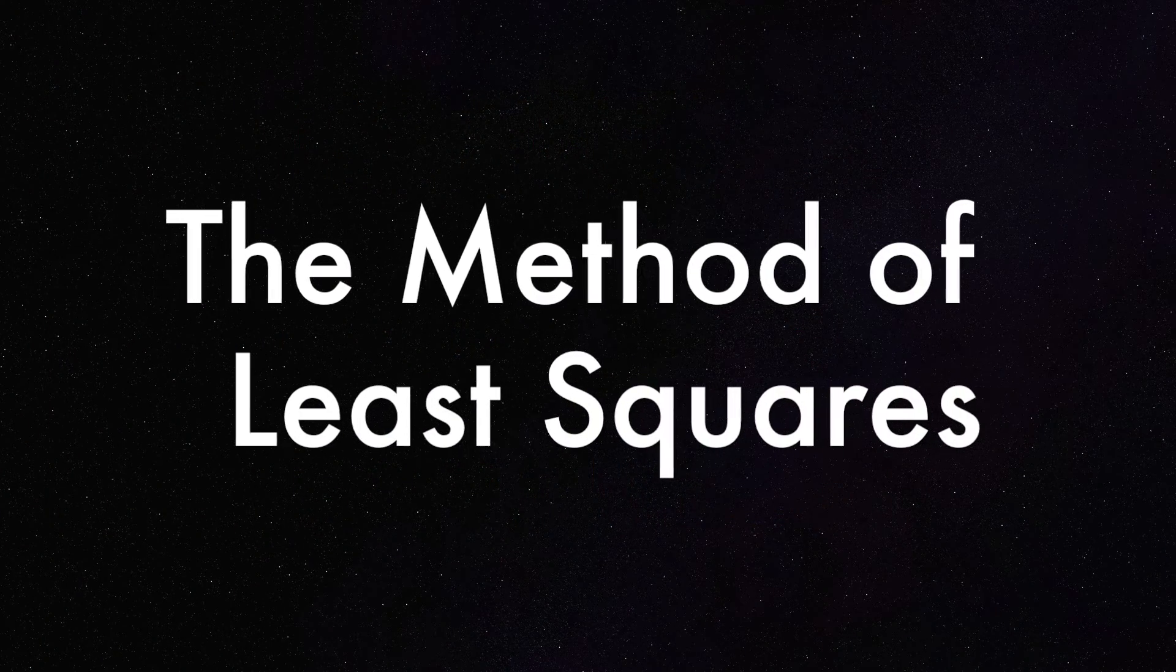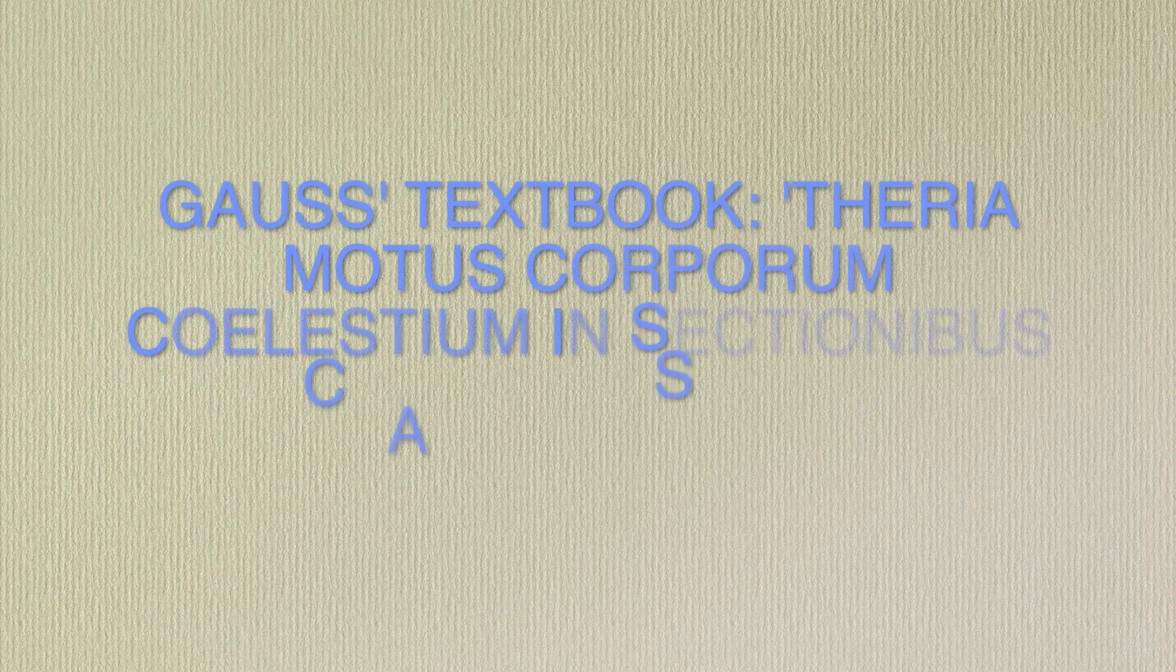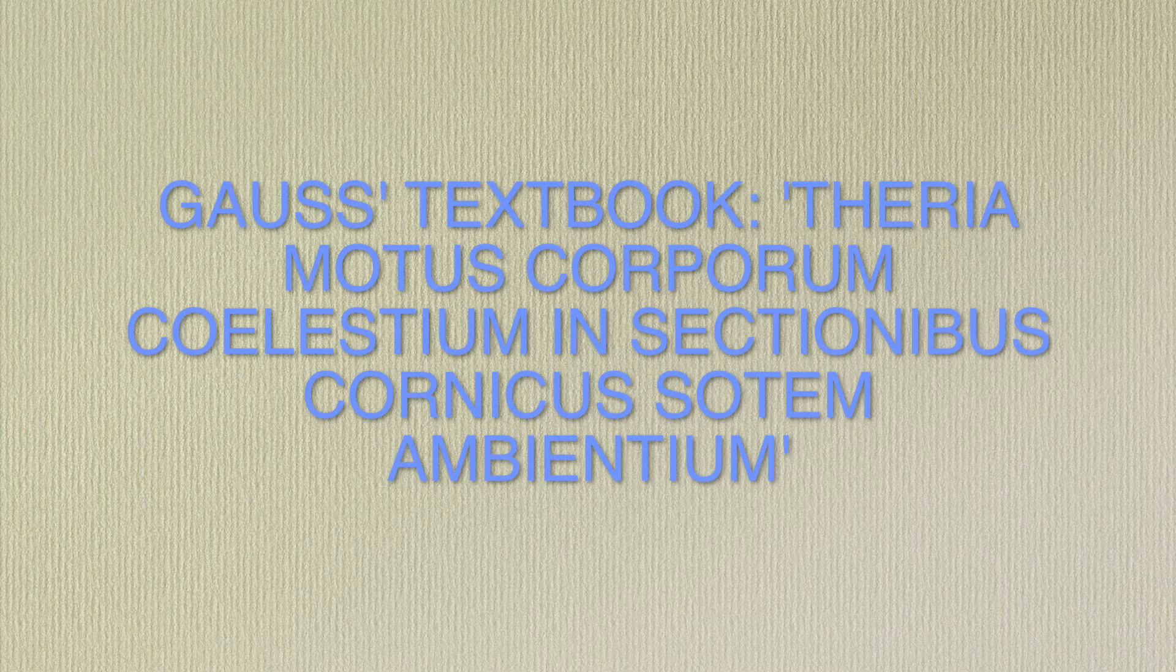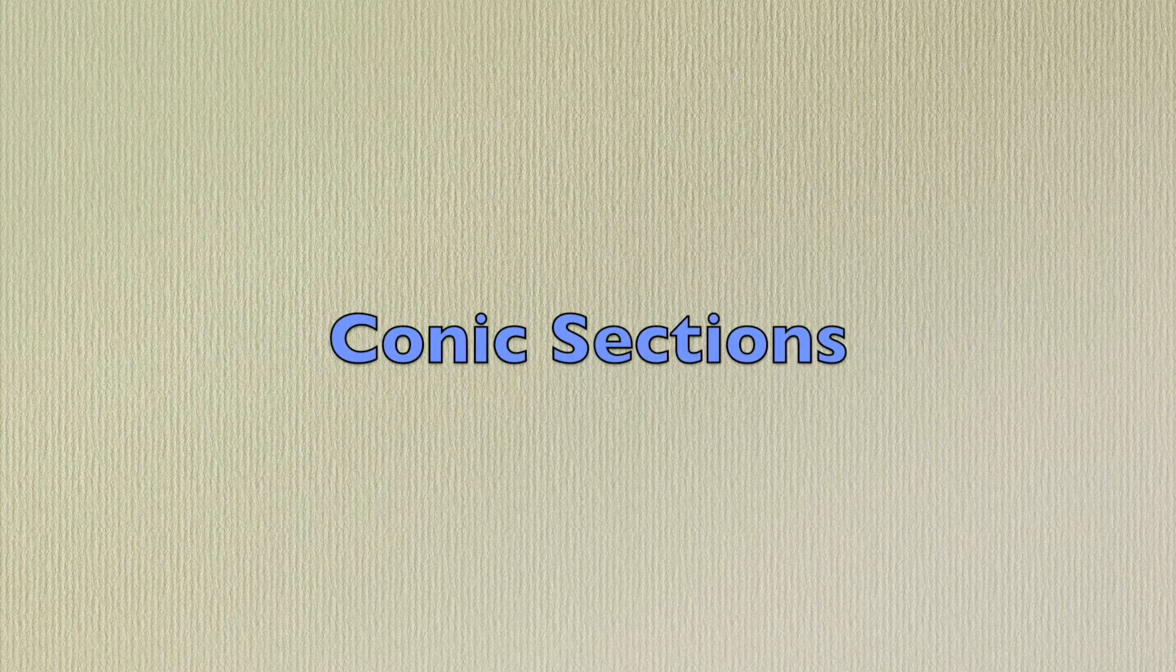In 1795, Gauss used a method of least squares to predict the orbits of celestial bodies. He produced yet another textbook, titled Theoria Motus Corporum Coelestium in Sectionibus Conicis Solem Ambientium. This book dealt with the motion of celestial bodies, differential equations, conic sections, and elliptical orbits.